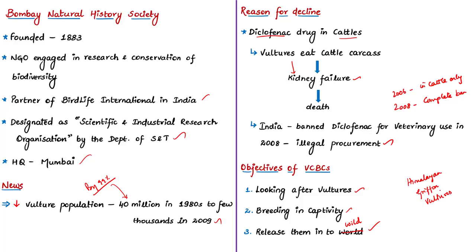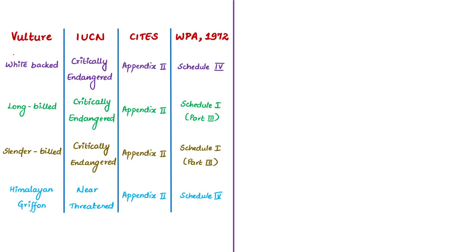Two of the birds will have satellite platform transmitting terminals and the rest will have wing tags and rings to monitor movement. After release, if the vultures don't find any drug-related mortality in the next one year, scientists plan to release more. In this news article, four vultures were discussed: white-backed vulture, long-billed vulture, slender-billed vulture, and Himalayan griffon vulture. The first three are classified as critically endangered under the IUCN Red List of Threatened Species, while the Himalayan griffon vulture is classified as near-threatened.